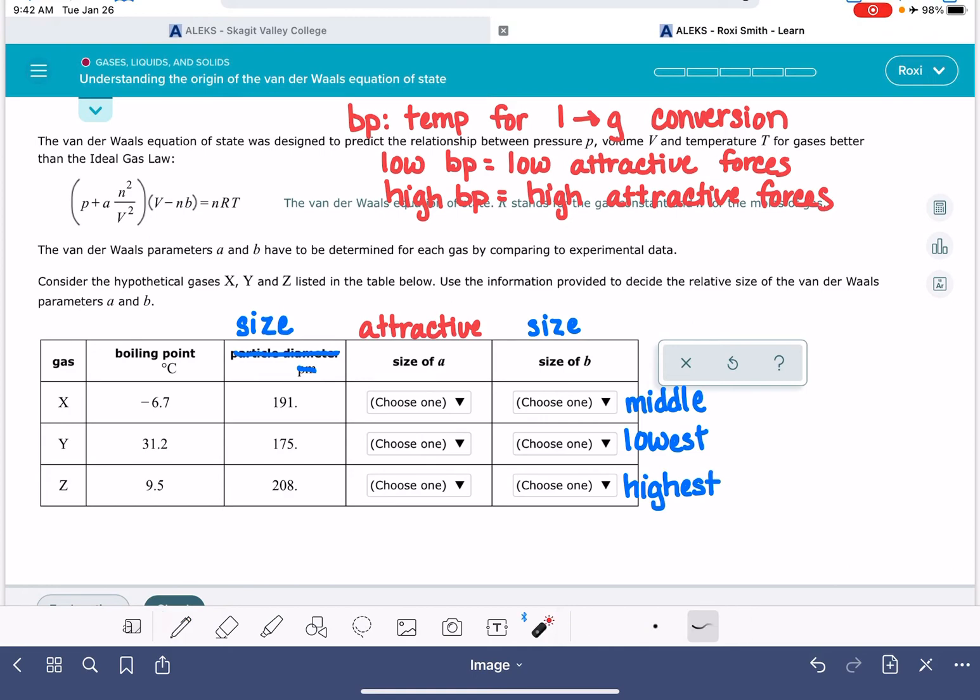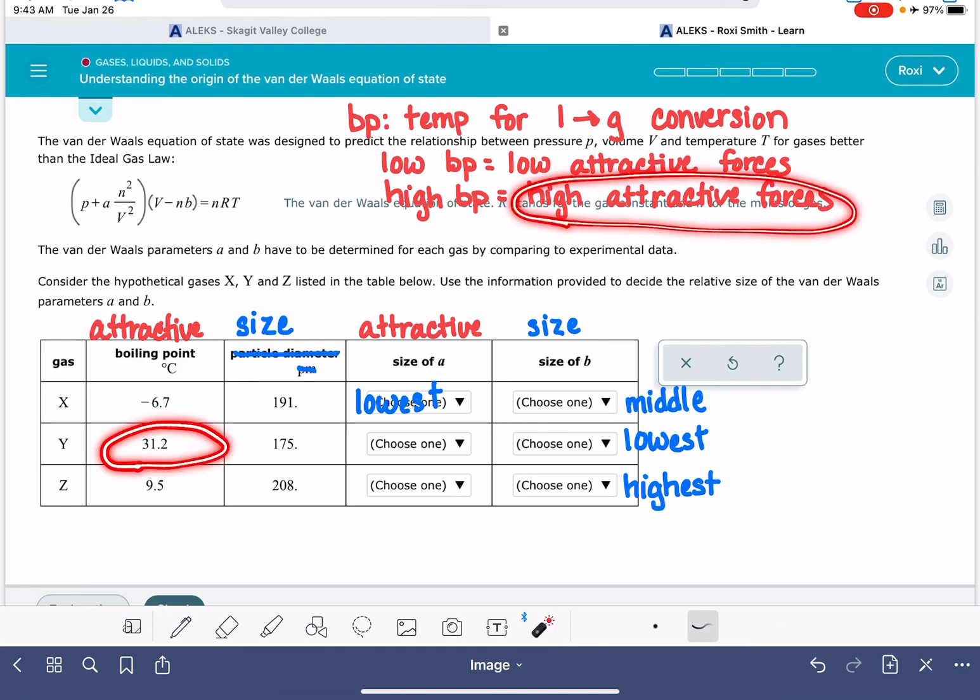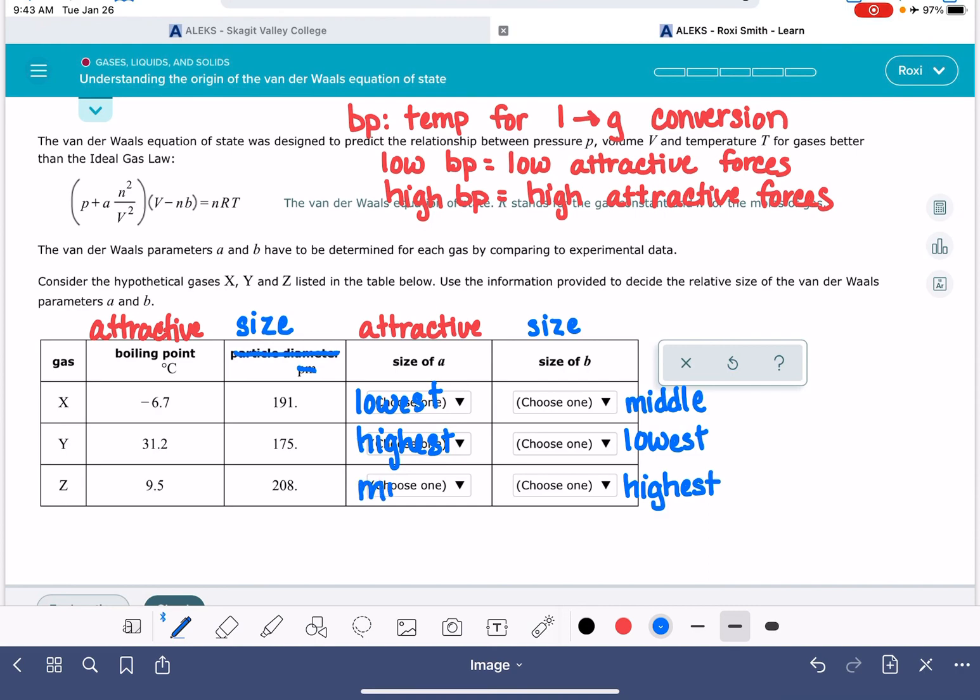So in this data, this is really a roundabout way of giving us information about the attractive forces between the molecules. So the sample of gas that has the lowest boiling point, this is the sample of gas that has the lowest attractive forces. And again, just like with the size correction, the more significant the attractive forces actually are, the bigger the correction factor needs to be. So our gas sample that has very low boiling point, low attractive forces, it's going to have the lowest correction factor. Our sample of gas that has a very high boiling point, that means it has high attractive forces. That means that it's going to need to have the highest correction factor. And then the one in the middle is something in the middle.